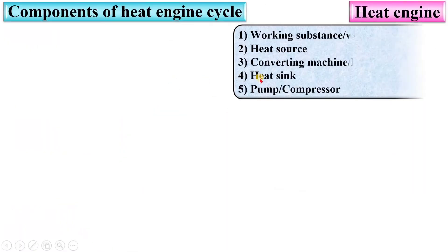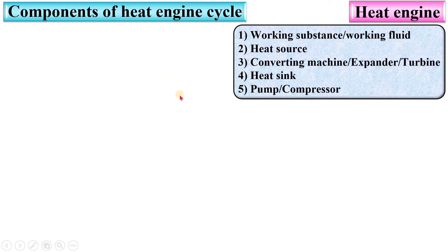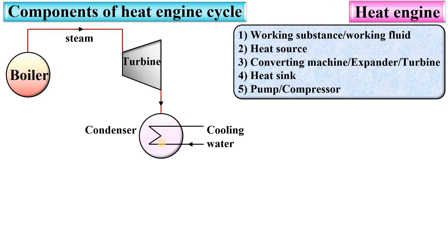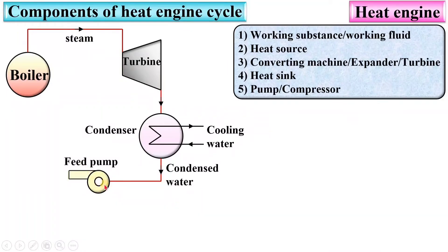Now let's look at the components of the heat engine cycle. We have discussed five different components. Let us draw the diagram: consider a boiler as the heat source. In the boiler, steam is produced and then sent to the turbine, then passed through the condenser where heat is transferred with the help of cooling water. Steam is converted into condensed water by the condenser. The pressure of this condensed water is increased with the help of the pump, and this pressurized condensed water is sent again into the boiler. This is the block diagram of the heat engine cycle.